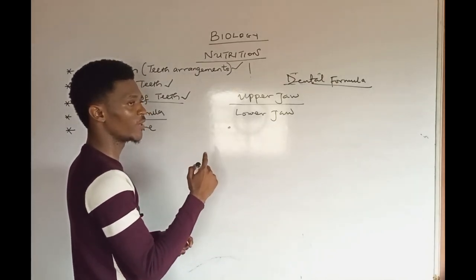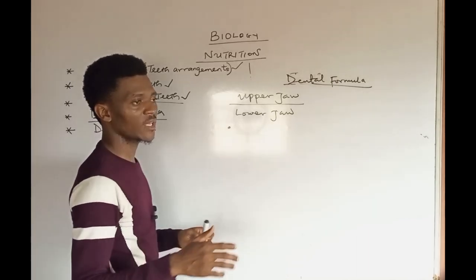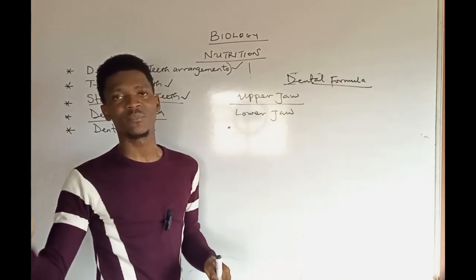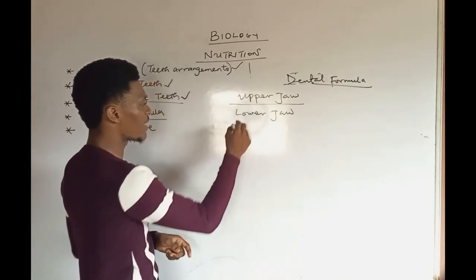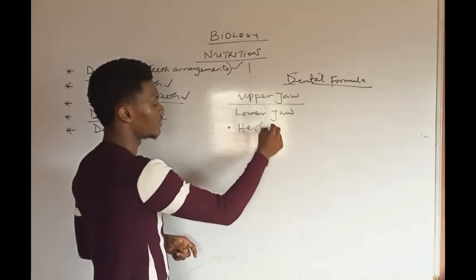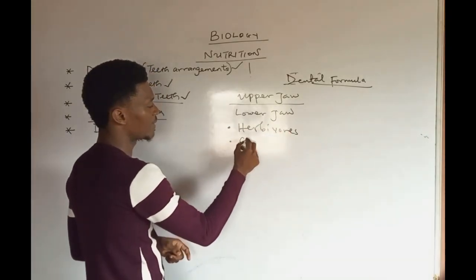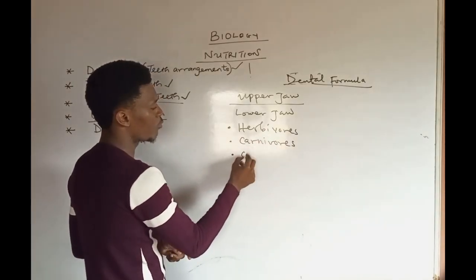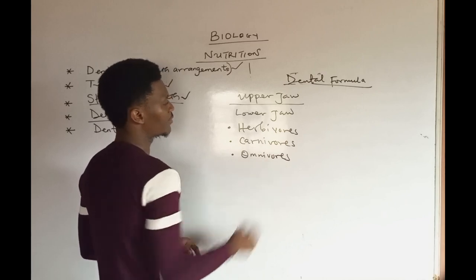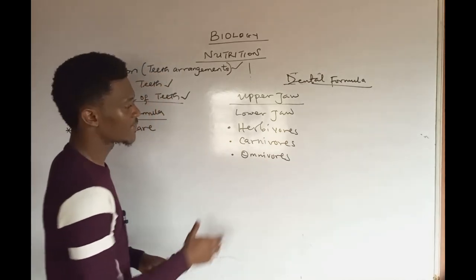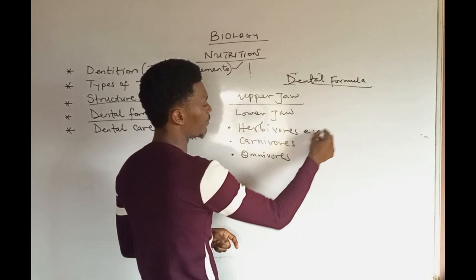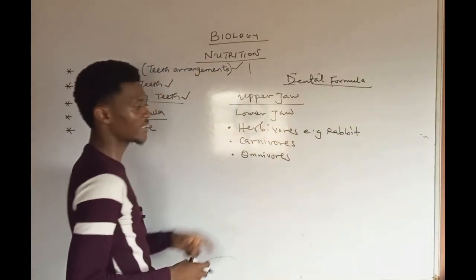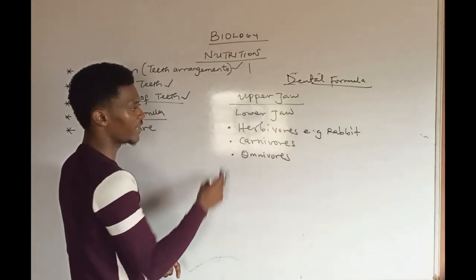For the dental formula, we will group organisms based on what they feed on. From our previous discussion, heterotrophs are divided based on what they feed on into herbivores, carnivores, and omnivores. An example of a herbivore is a rabbit. Let's start with the dental formula of herbivores.